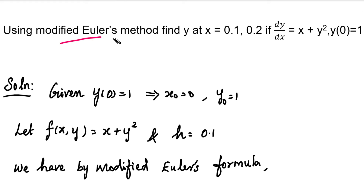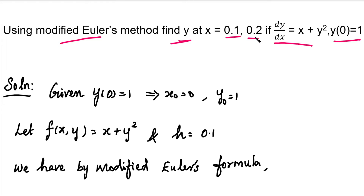Hi students, we need to solve a problem using the modified Euler's method. In the question, we need an initial condition for dy/dx, and we need to solve the y value at the points x equal to 0.1 and 0.2. That is, we need to find y(0.1) and y(0.2) using the modified Euler's formula.